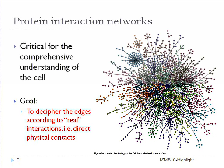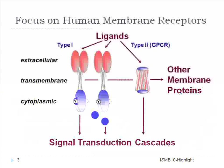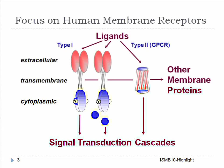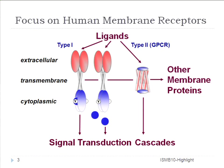Most edges on this graph are still missing. To decipher these missing edges, unlike most previous work that looks at general human protein-protein interactions, in this paper we focus on the family called human membrane receptors. We focus on this family because human membrane receptors are attractive drug targets.